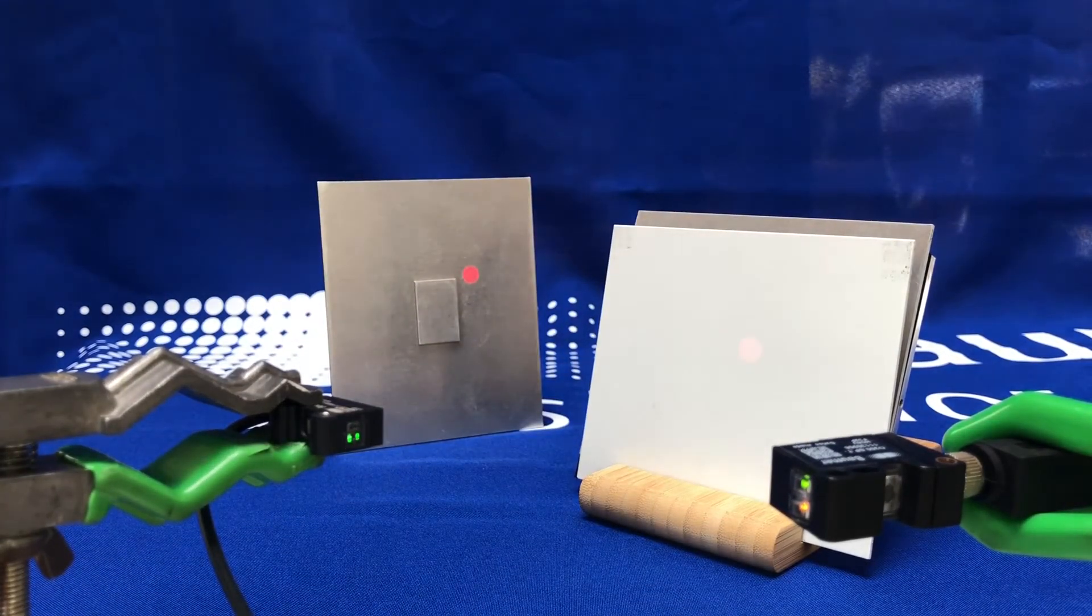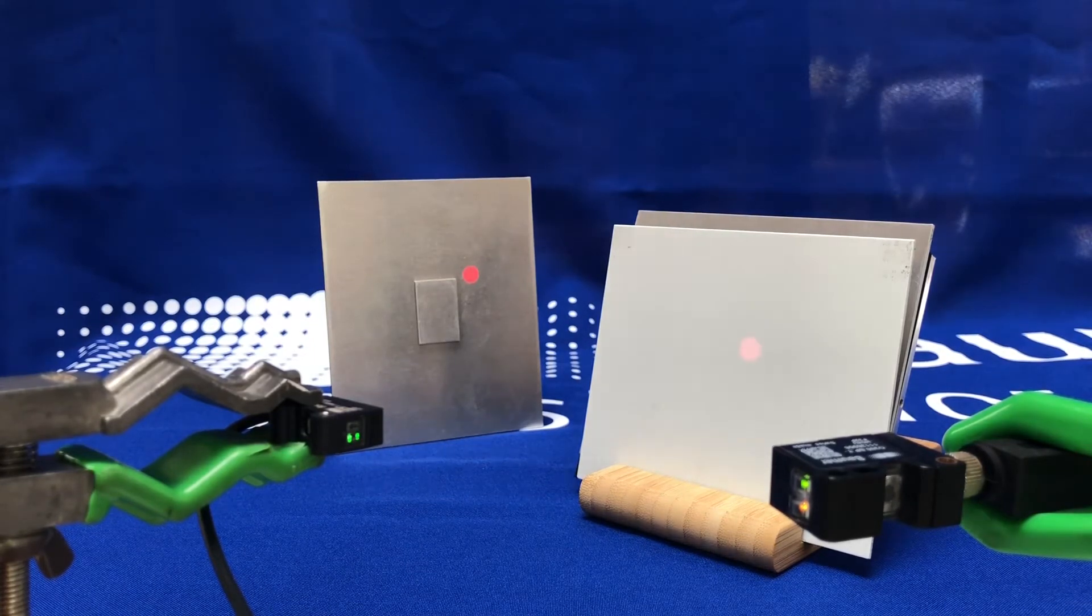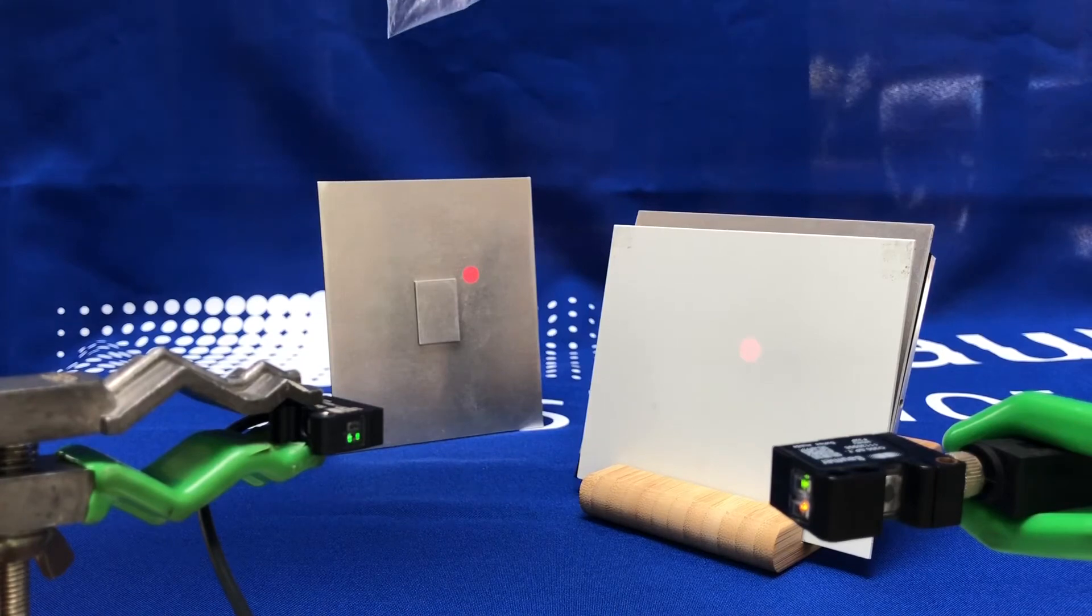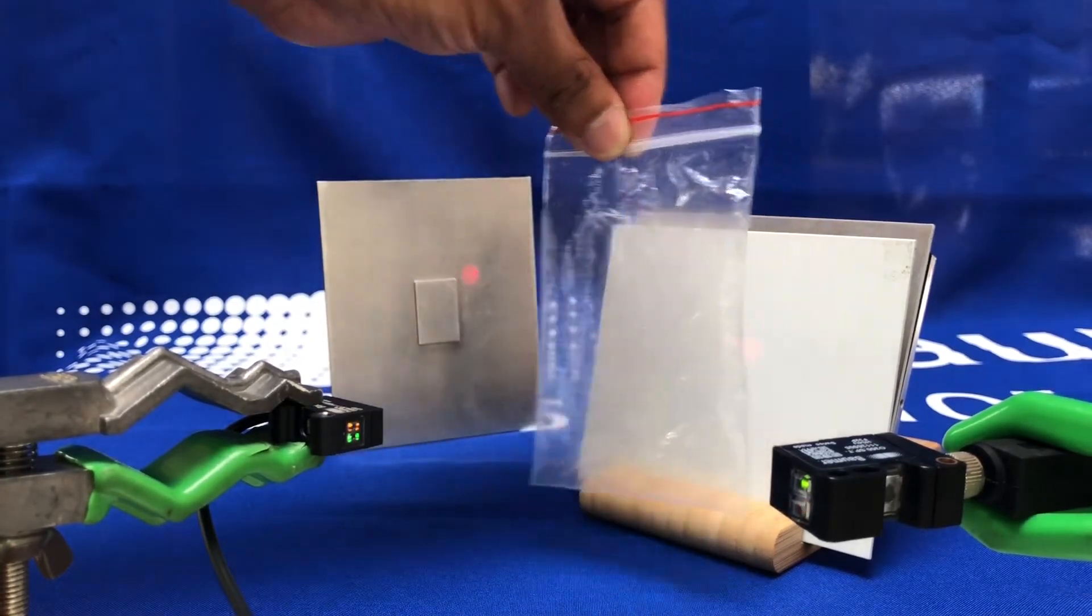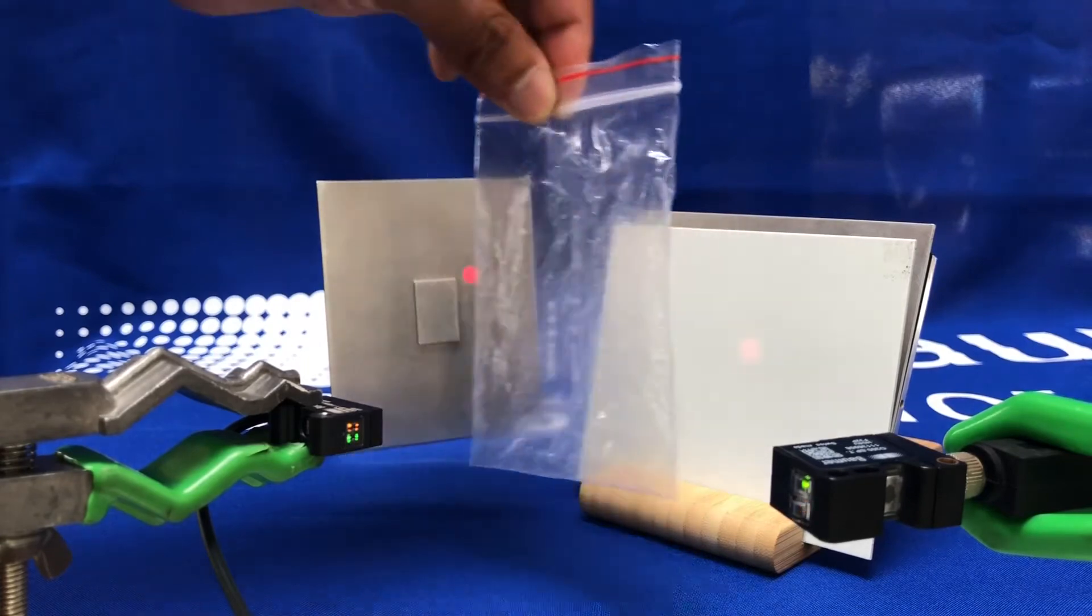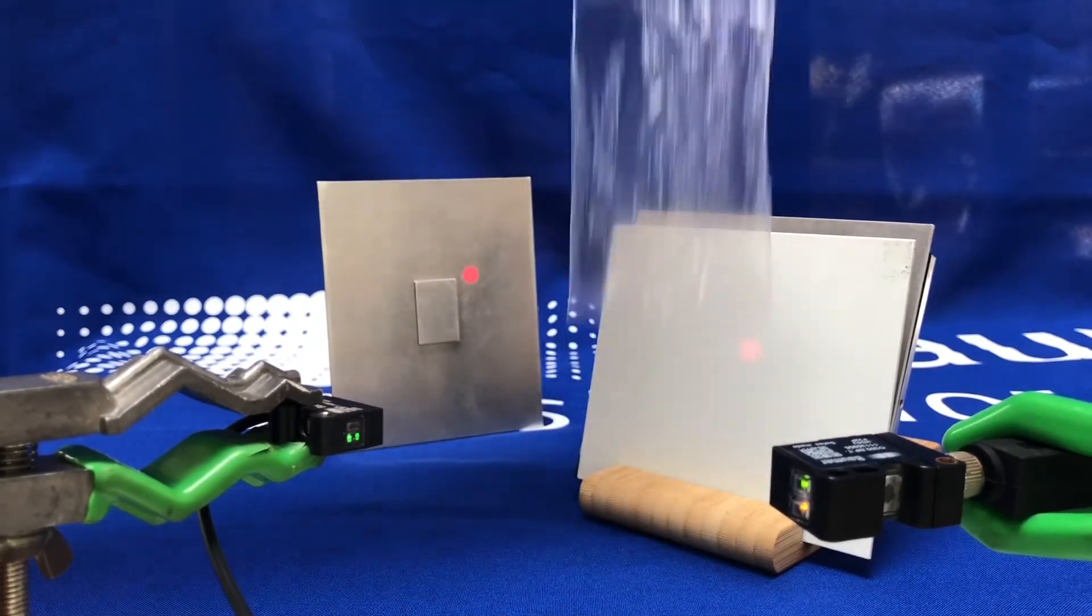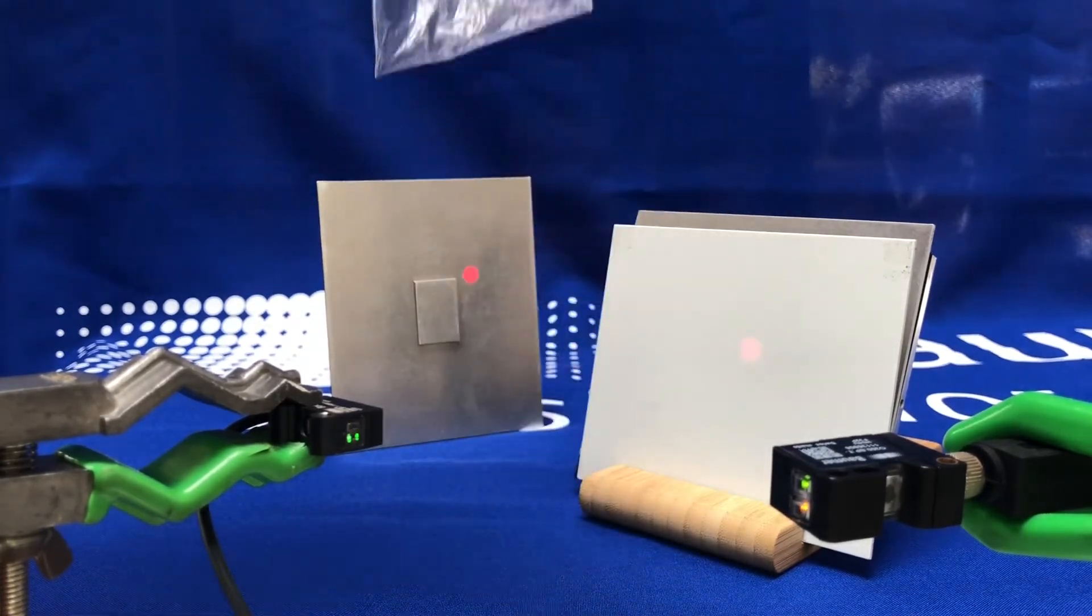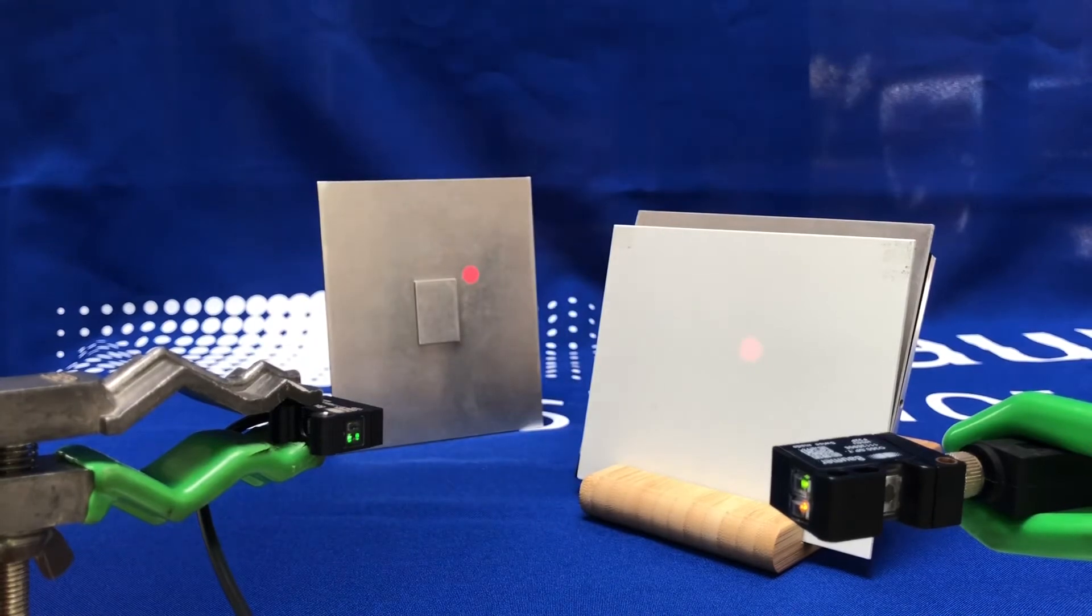If I use something like a poly bag, with the 0200 again, nice stable result there, and then with the 0300, very consistent result there.